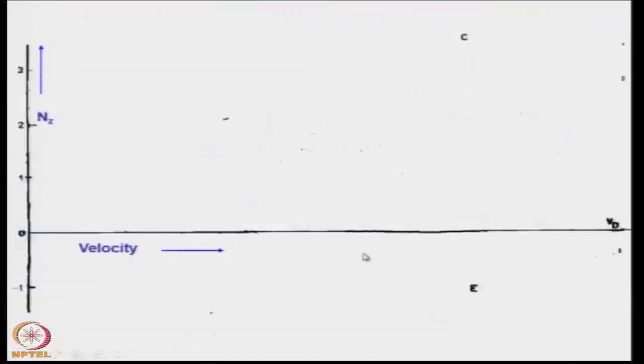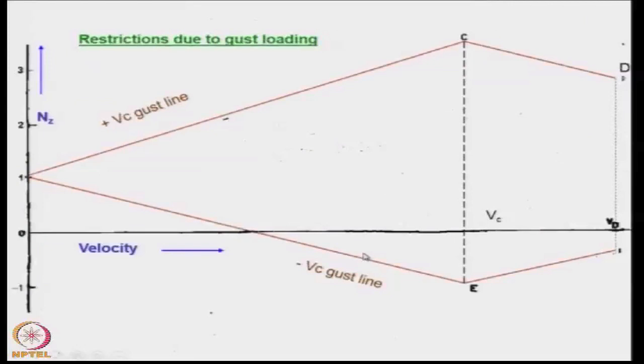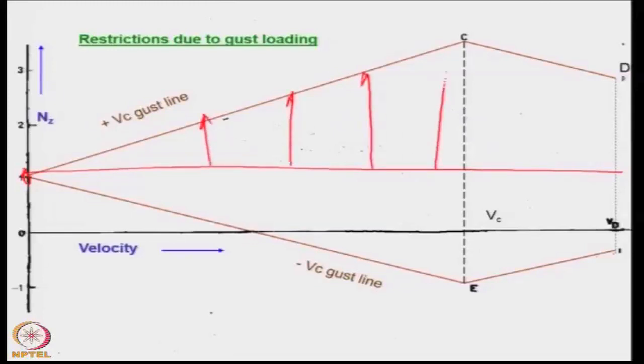Let us see what happens to the V-n diagram. This is the restriction with the gust loading. Notice that they are starting from the point 0, 1 because the aircraft is supposed to be in level flight. And in level flight at various velocities, due to gust, additional load factors are created.